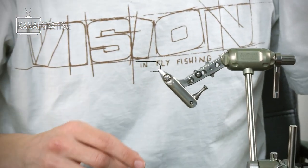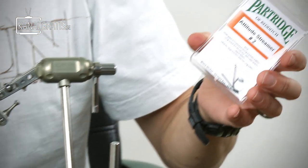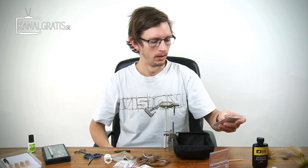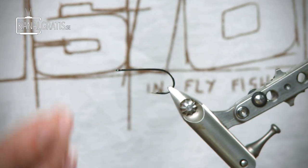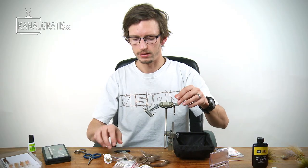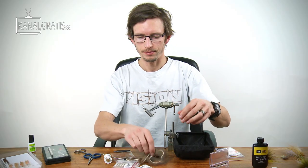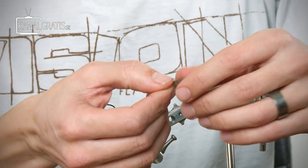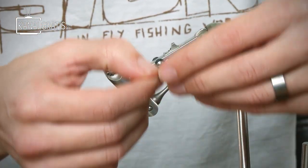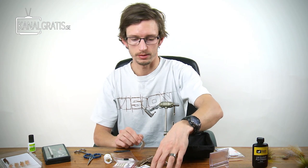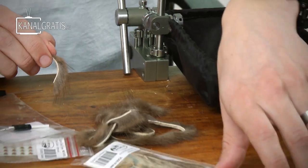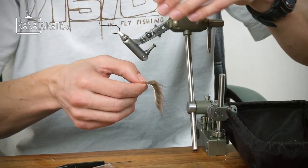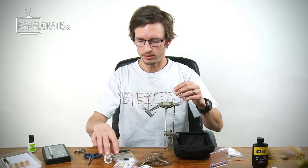The hook I'm using is a Partridge Attitude Streamer size number two. You can use whatever size hook you want, depending on the size of the fly that you want to tie. For the zonker wing I'm using a mink zonker, and the length of the fur is perfect for this type of fly and the size. But you can use opossum, you can use rabbit zonker, whatever you want, but I prefer the mink zonker for this type of fly.